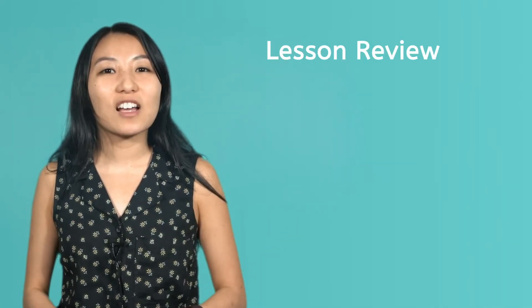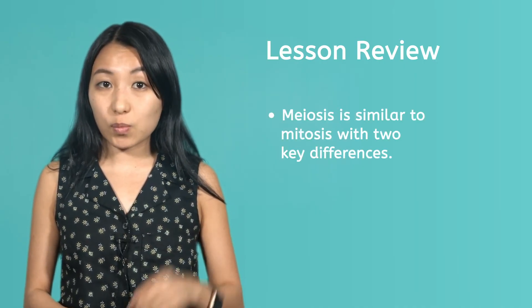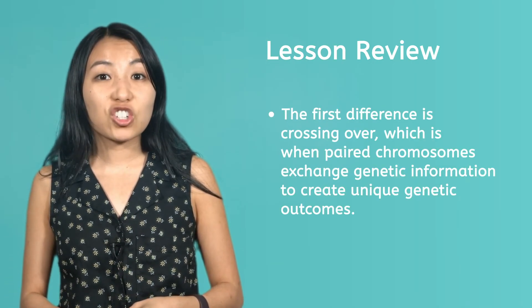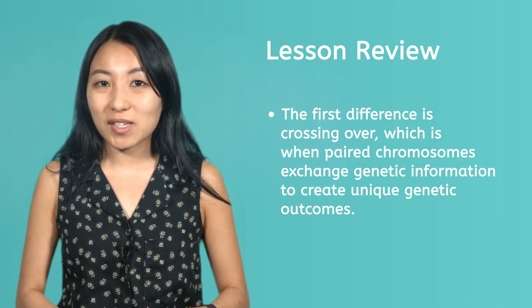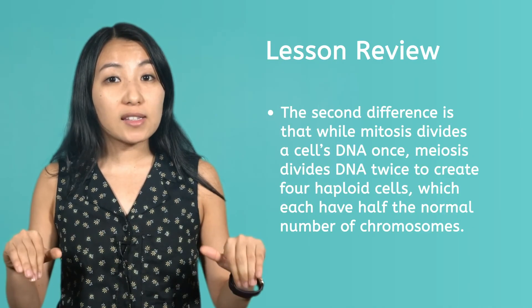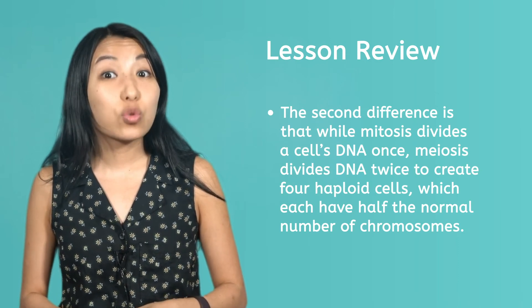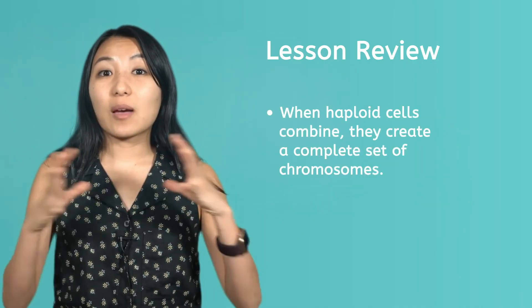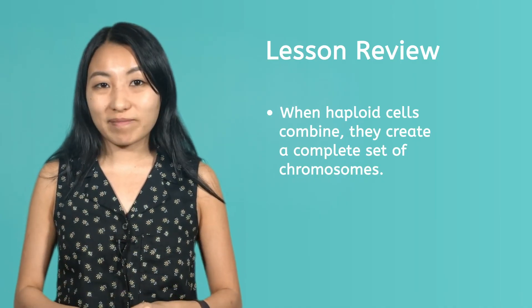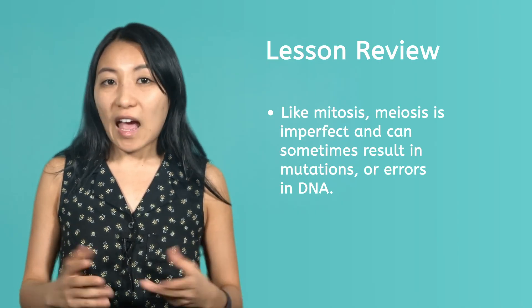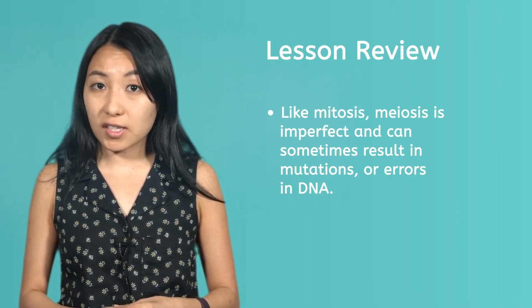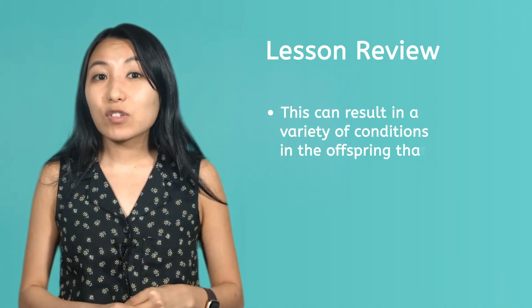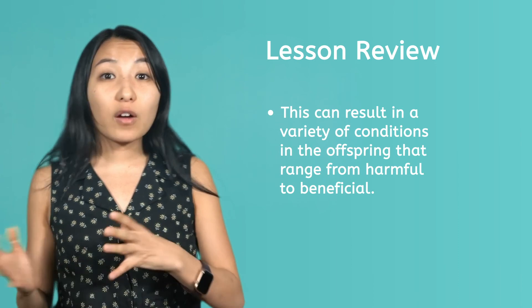Alright, we have now covered the basics of meiosis. We've learned that meiosis is similar to mitosis, with two key differences. The first difference is crossing over, which is when paired chromosomes exchange genetic information to create unique genetic outcomes. The second difference is that while mitosis divides a cell's DNA once, meiosis divides DNA twice to create four haploid cells, which each have half the normal number of chromosomes. When haploid cells combine, they create a complete set of chromosomes. Like mitosis, meiosis is imperfect and can sometimes result in mutations or errors in DNA. A mutation in meiosis affects all of the cells of potential offspring, which can result in a variety of conditions ranging from harmful to beneficial.